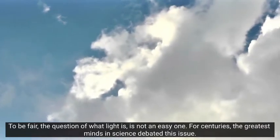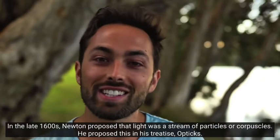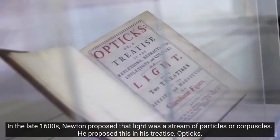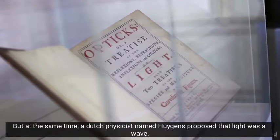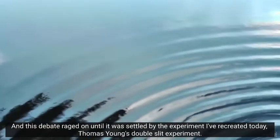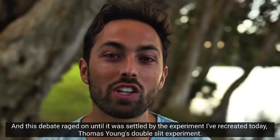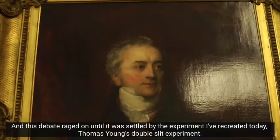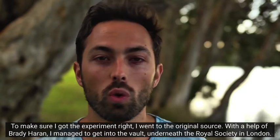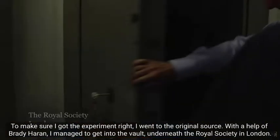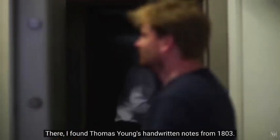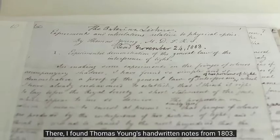For centuries, the greatest minds in science debated this issue. In the late 1600s, Newton proposed that light was a stream of particles, or corpuscles. He proposed this in his treatise optics. But at the same time, a Dutch physicist named Huygens proposed that light was a wave. This debate raged on until it was settled by the experiment I've recreated today, Thomas Young's double-slit experiment. To make sure I got the experiment right, I went to the original source. With the help of Brady Heron, I managed to get into the vault underneath the Royal Society in London.